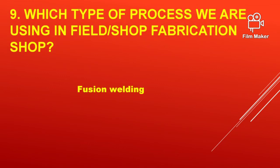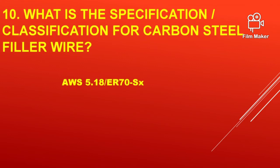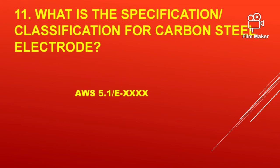Which type of process are we using in field and shop fabrication? Fusion welding. What is the qualification and classification for carbon steel electrode? AWS 5.1, E and a 4-digit number.